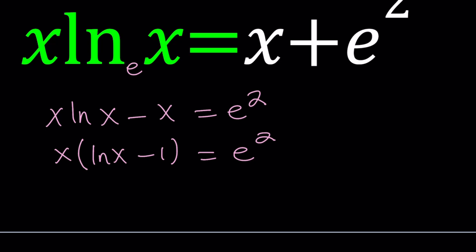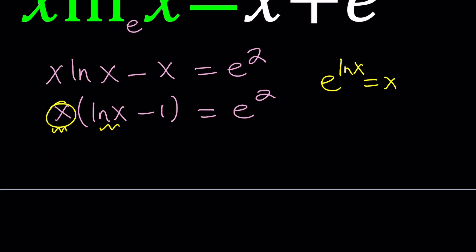What can we do next? I want to put this in a different form, and I'll tell you on the next step what form I want to use. First of all, notice that we have an ln x here and an x here. Let's go ahead and express x using ln x, and this is how we can do it. e to the power ln x equals x. Let's replace x with that. e to the power ln x, multiply by ln x minus 1 equals e squared.